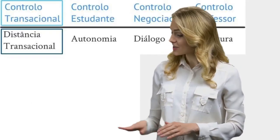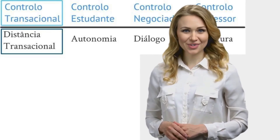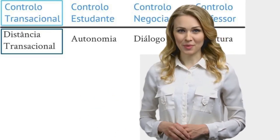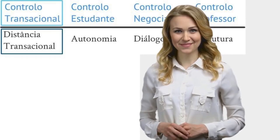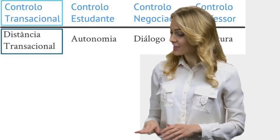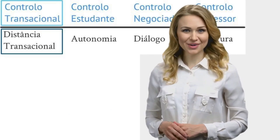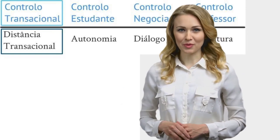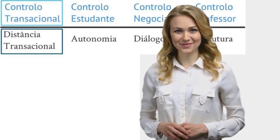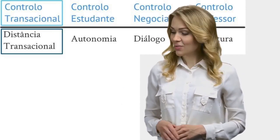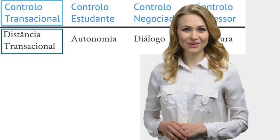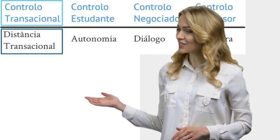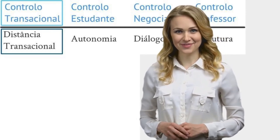Related to the theory of transactional distance is the theory of transactional control, proposed by John Drawn. It focuses on the concept of control in learning environments and explores the balance of control between learners and instructors and its impact on the learning experience. Transactional control theory emphasizes that learning environments involve a dynamic interplay of control between learners and instructors, where control refers to the power or authority individuals have over decisions and actions within the learning process.